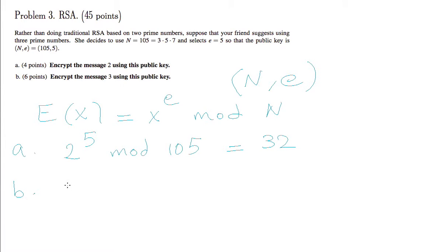And part b: 3 to the power 5 mod 105. So we need to do some calculations. 3 to the power 5 is 243 mod 105. 243 is 2 times 105 plus 33, so this is the remainder.